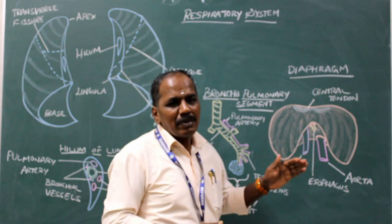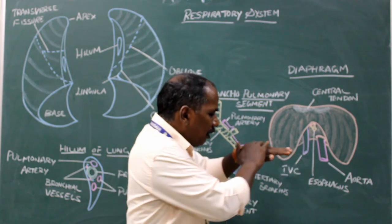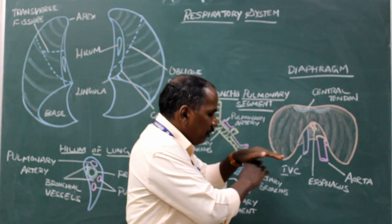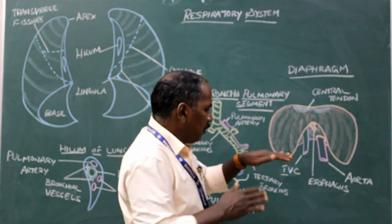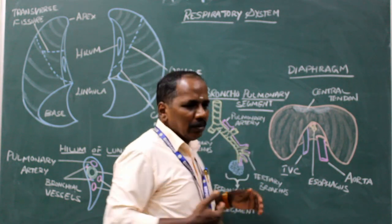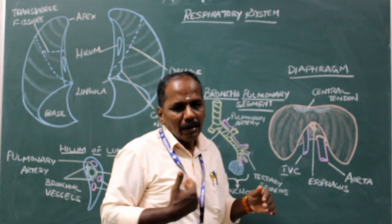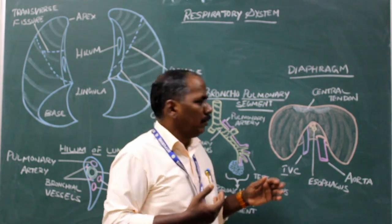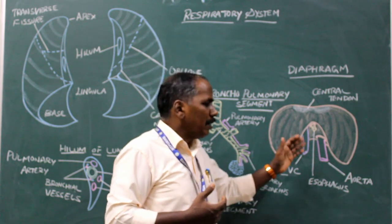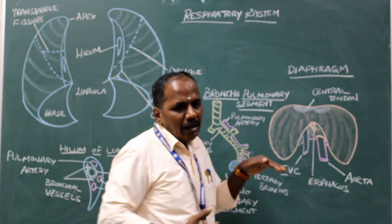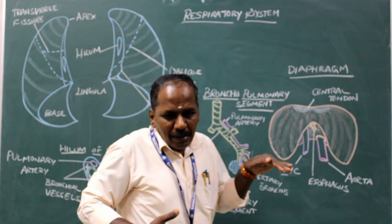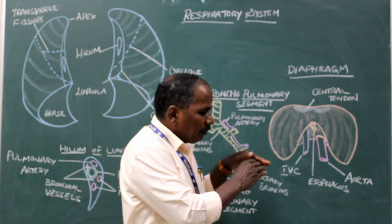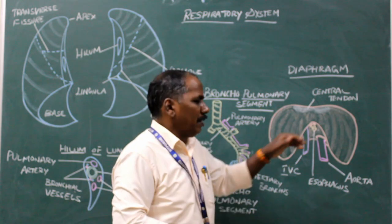The diaphragm has two surfaces. The superior surface is related to the right lung, left lung, and the heart. The inferior surface is related to the liver on the right side and the stomach on the left side.